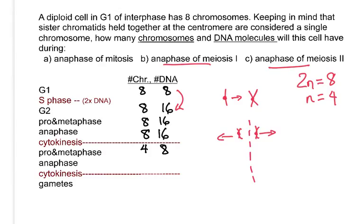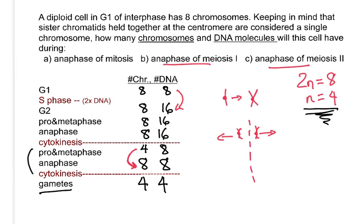After cytokinesis of meiosis I, everything splits in half. In meiosis II, during prophase and metaphase II, chromosomes are moving around but nothing changes the counts. It's not until anaphase II that you get the splitting of sister chromatids — just like in mitosis. This gives a doubling of chromosome number at anaphase II, and then cytokinesis splits everything down the middle again.